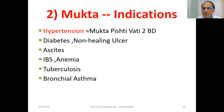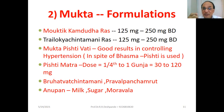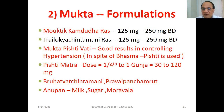Mukta is used for diabetes, non-healing ulcers of diabetic or any other reason, ascites, irritable bowel syndrome, anemia, tuberculosis, and bronchial asthma. Mukta formulations: Mautik-Kam-Dudha-Rasa — for antacid, stomatitis, healing, and peptic ulcer, one to two tablets twice a day. Trilokya-Chintamani-Rasa — very costly drug, one tablet twice a day. Mukta-Pishti-Vati gives good results in controlling hypertension. We prefer to use Mukta-Pishti over Mukta-Bhasma. There is a difference between Bhasma and Pishti. Pishti dose is one-fourth to one Gunja, that is 30 to 120 mg.